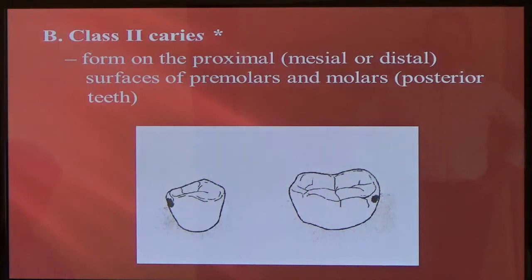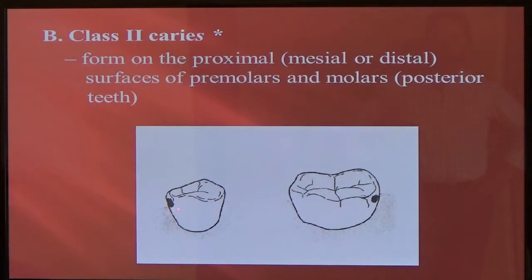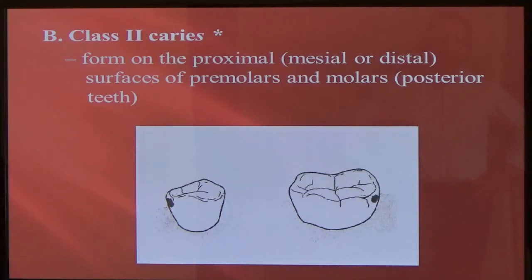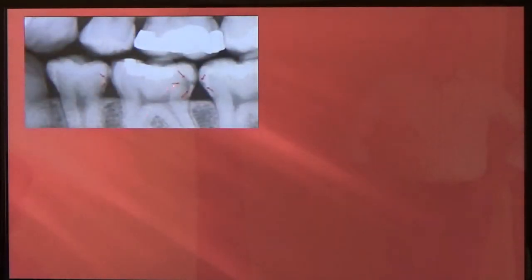Class 2. They form on the proximal or on the contact area of posterior teeth — so premolars or molars. The contact area or the proximal area is the area that is adjacent or next to the tooth next to it. So it's anything in between those back teeth. Here they are — you can see these shadows. These are class 2, in between, usually underneath the contact of back teeth.